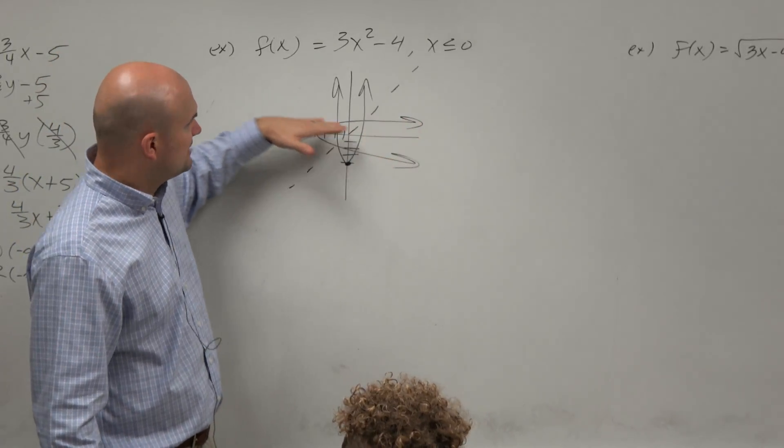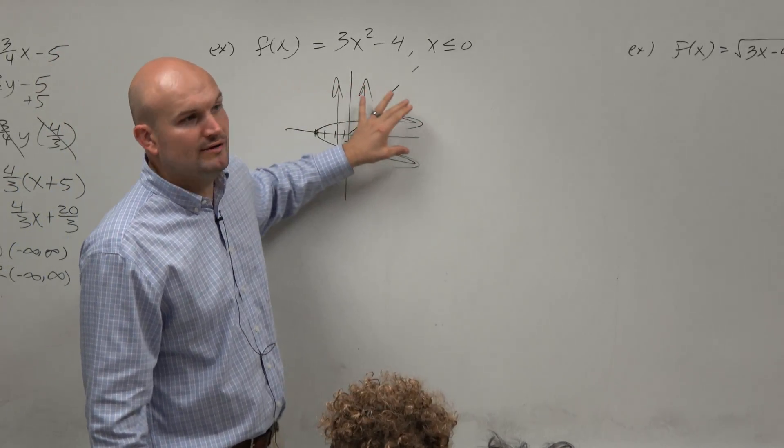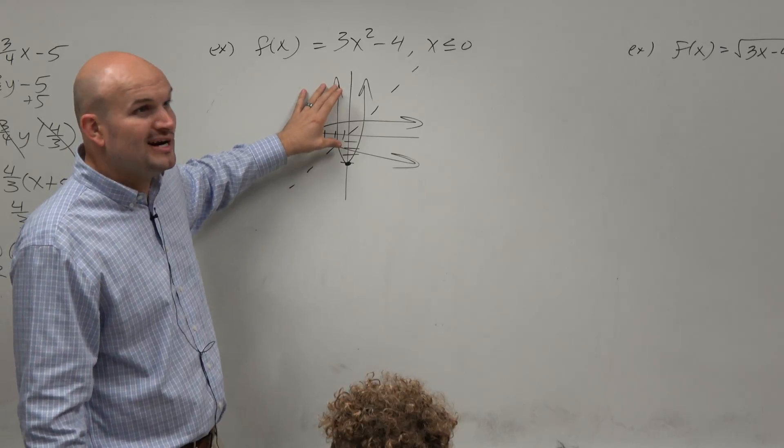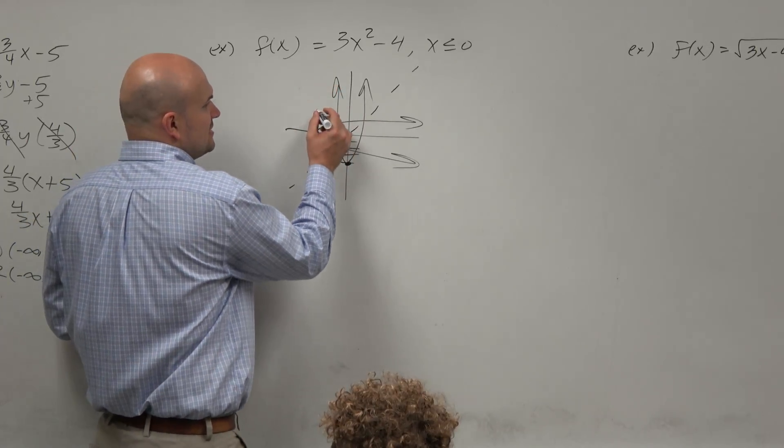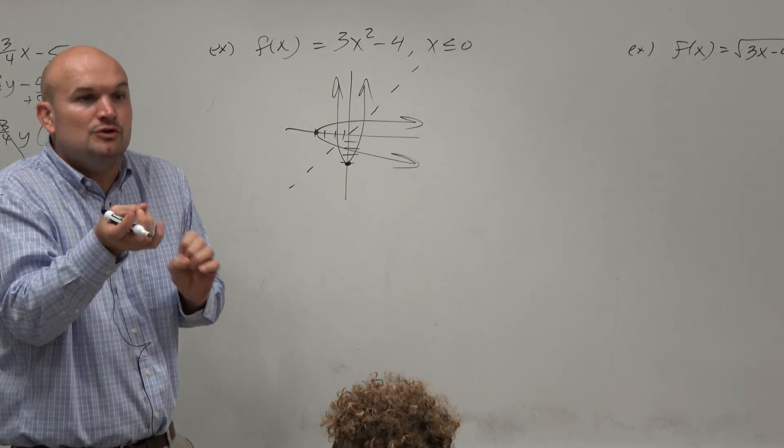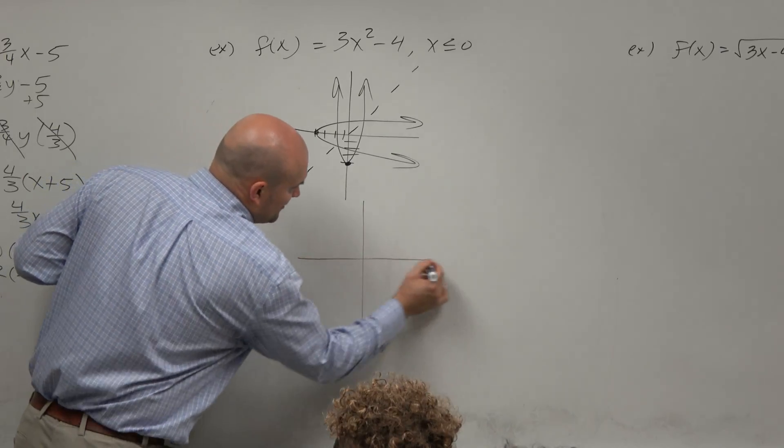So the reason why is because this is not what we call a one-to-one function. Quadratics are functions. They're not one-to-one functions. And basically what that means is every x has to have a unique y value.